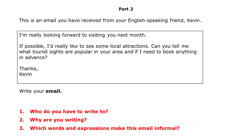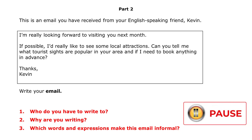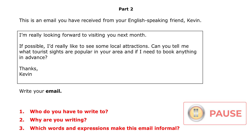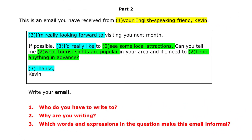Here's an example exam question. Pause the video, read the email, and think about the questions in red at the bottom. The first question: who do you have to write to? Well, it's your English friend Kevin. When you see 'your friend' in the question, you should immediately know that you're writing an informal letter or email.